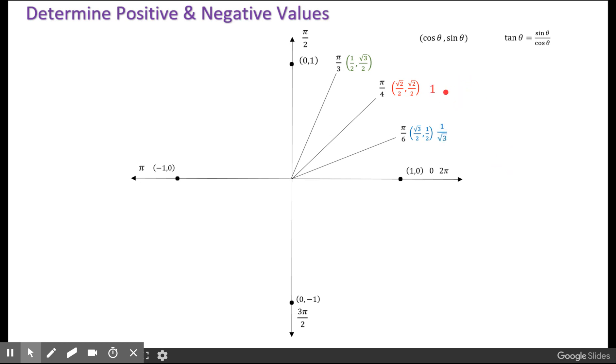Root 2 over root 2 for pi over 4, and the tangent is root 3 over 1, or just root 3 for pi over 3.